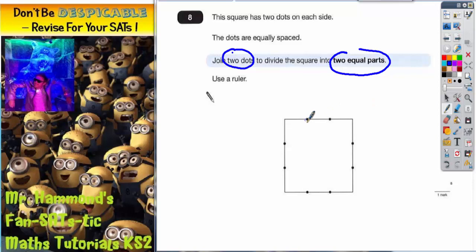Now the easiest thing to do is pick a dot to start from and test whether it splits the square into two equal parts by placing your ruler from that dot to another dot and see if it actually works.